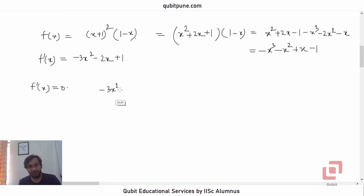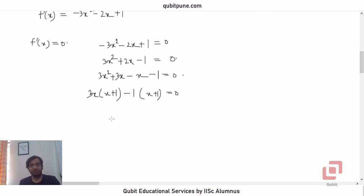Now when we equate the derivative to 0, we are allowed to multiply both sides by negative 1. 3X squared plus 2X minus 1 equal to 0. So we can now split the middle term into plus 3X and negative X. 3X common X plus 1, minus 1 common X plus 1. So this leaves us with two roots. X plus 1 equal to 0 gives us X as negative 1, and 3X minus 1 equal to 0 gives us X as 1 upon 3.